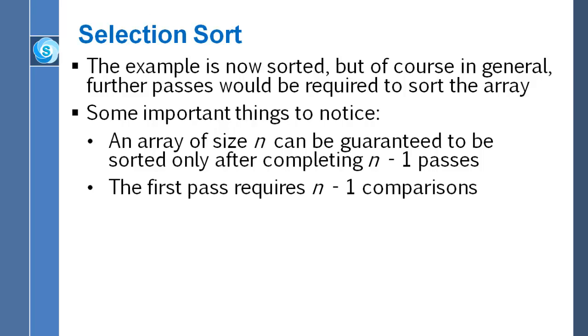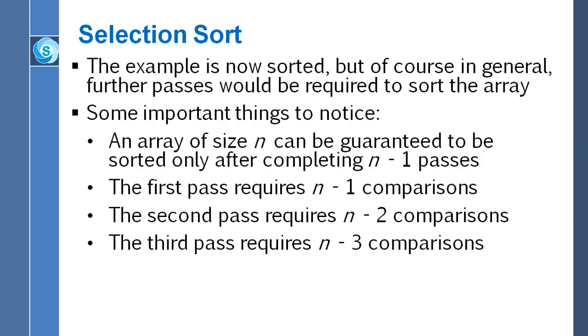The first pass requires n minus one comparisons. Go back and check that. During the first pass, there are n minus one comparisons. In the example, n was six, so there are exactly five comparisons in the first pass. During the second pass, there are only n minus two comparisons. During the third pass, there are n minus three comparisons. And so forth. And then on the last pass, there's only a single comparison. So that aspect of things is exactly as it was with bubble sort.